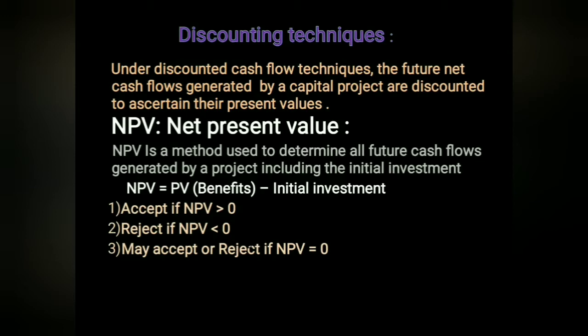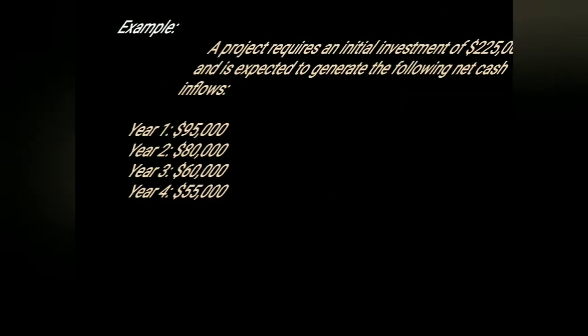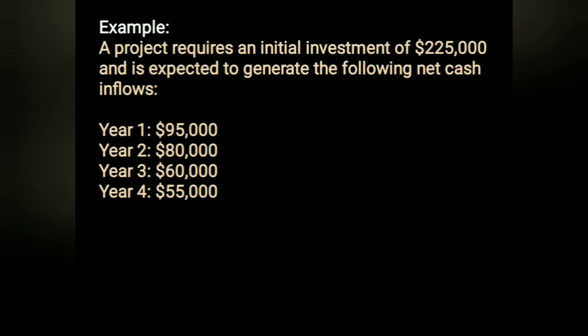Here is an example. A project requires an initial investment of rupees 2 lakhs 25 thousand. It is expected to generate the following net cash flows over four years: year 1 — 95,000; year 2 — 80,000; year 3 — 60,000; year 4 — 55,000. Compute the NPV if the minimum desired rate of return is 12 percent.